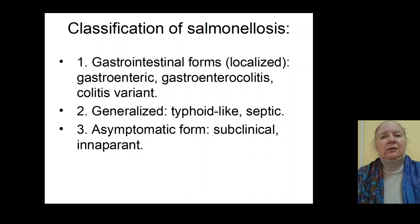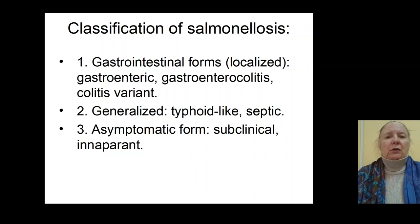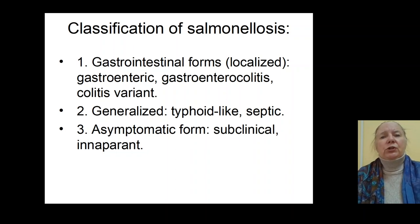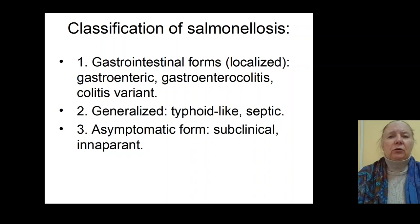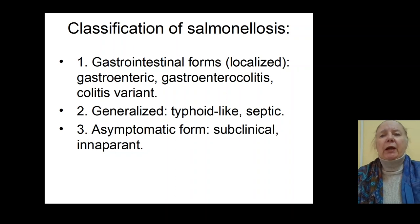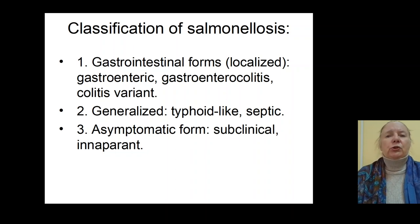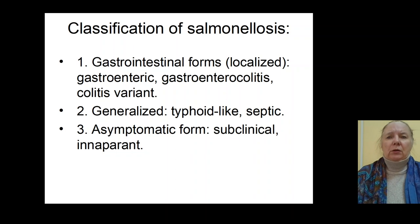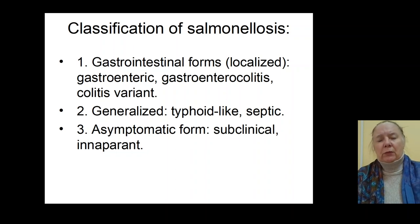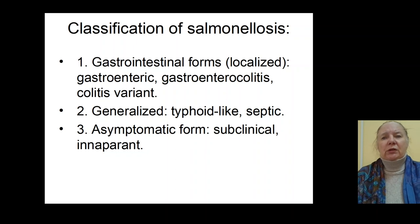The next variant is the gastroenterocolitis variant, characterized by increasing temperature, syndrome of gastritis with nausea and vomiting, then syndrome of diarrhea — watery, green, yellow, massive diarrhea — and then formation of the syndrome of colitis: tenesmus, diarrhea with mucus and blood admixtures, and spasm in the sigma region in patients with gastroenterocolitis syndrome. This variant may also be mild, moderate, or severe.